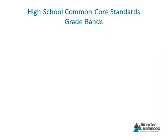Unlike the Kindergarten through Grade 8 Common Core State Standards for English Language Arts, the high school standards are not grade level specific. The high school standards represent what students must know and be able to do upon graduation from high school. At high school, the standards are organized into two grade bands: grades 9 and 10, and grades 11 and 12.